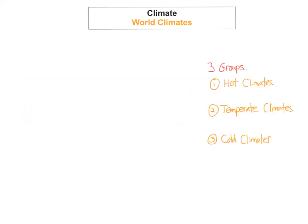You need to know one hot climate, one temperate climate, and one cold climate in good detail for your Junior Certificate examination. You should be able to talk about each of the following headings for each climate that you learn.